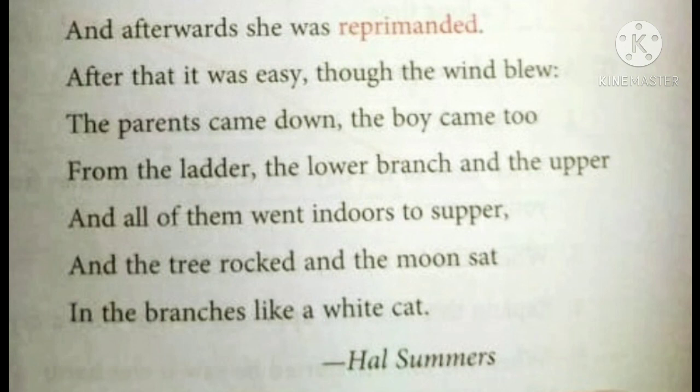After that it was easy, though the wind blew. The parents came down, the boy came too — from the ladder, the lower branch and the upper — and all of them went indoors to supper. And the tree rocked, and the moon sat in the branches like a white cat. Here 'the moon sat' uses personification again. It seemed as if the moon was sitting on the branch, and he could imagine the white cat sitting there. It was easy because he had the support of his family, and all the fear vanished.